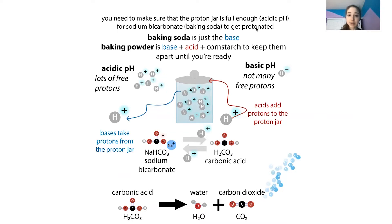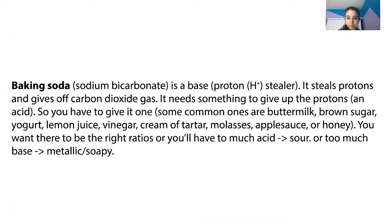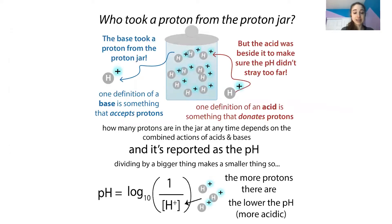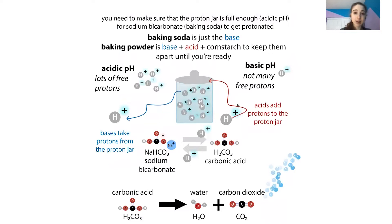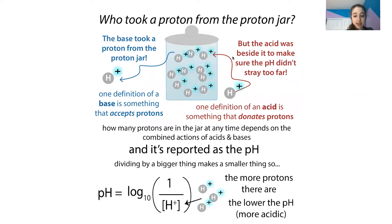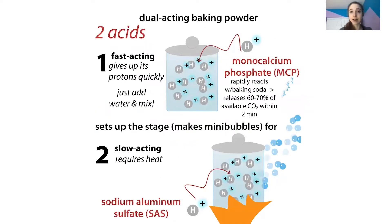Baking soda just has the base, and you have to add some sort of acid — things like vinegar, honey, molasses, cream of tartar, lemon juice, or yogurt. Baking powder has the acid and base combined already, often with something to keep them apart. In baking powder there's often a fast-acting part and a slow-acting part to control the speed of the reaction.